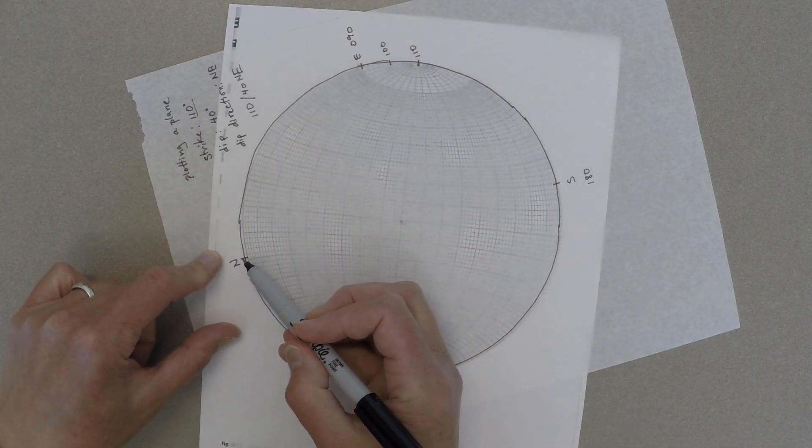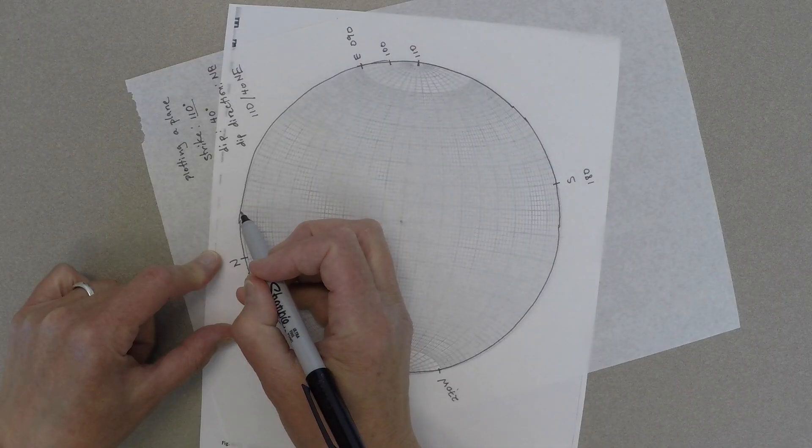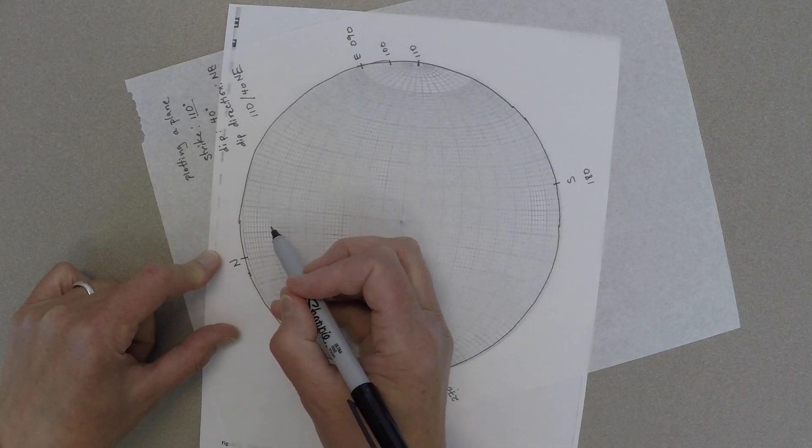Next thing you need to do is think about where the dip direction is. In this case, it's to the northeast, and on our tracing paper, that's on the left side of the stereo net.